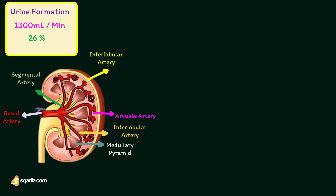Interlobular arteries run through the renal cortex, perpendicular to the arcuate artery. From each interlobular artery, numerous afferent arterioles arise.